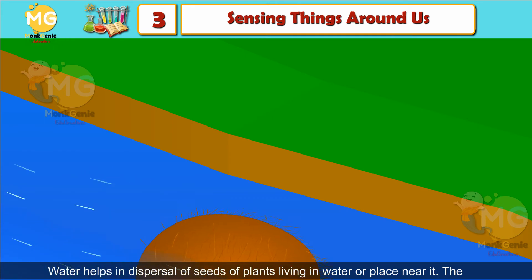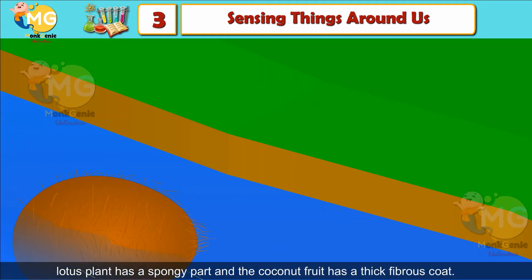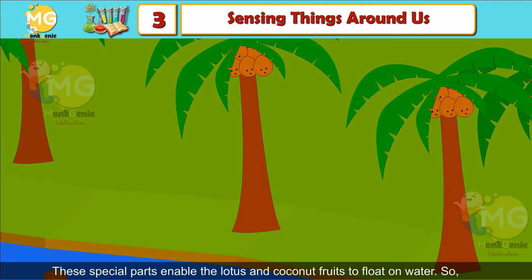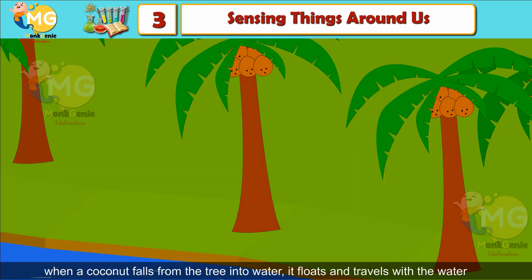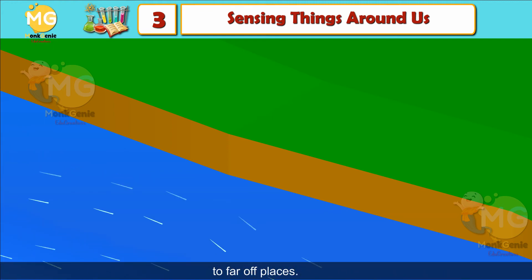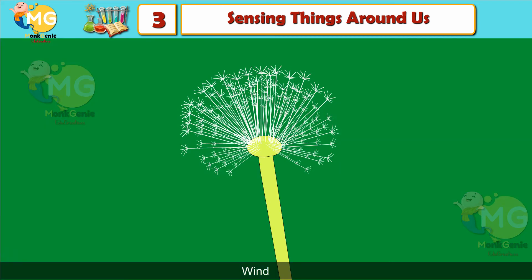Water: water helps in dispersal of seeds of plants living in water or places near it. The lotus plant has a spongy part and the coconut fruit has a thick fibrous coat. These special parts enable lotus and coconut fruits to float in water, so when a coconut falls from the tree into water, it flows and travels with the water to far-off places.